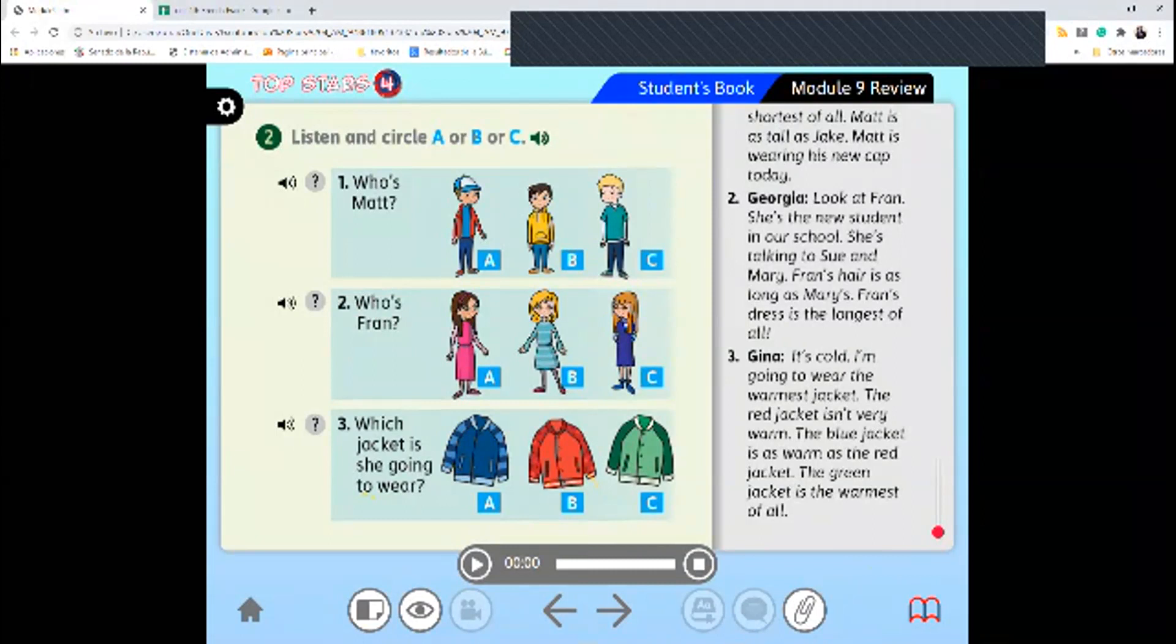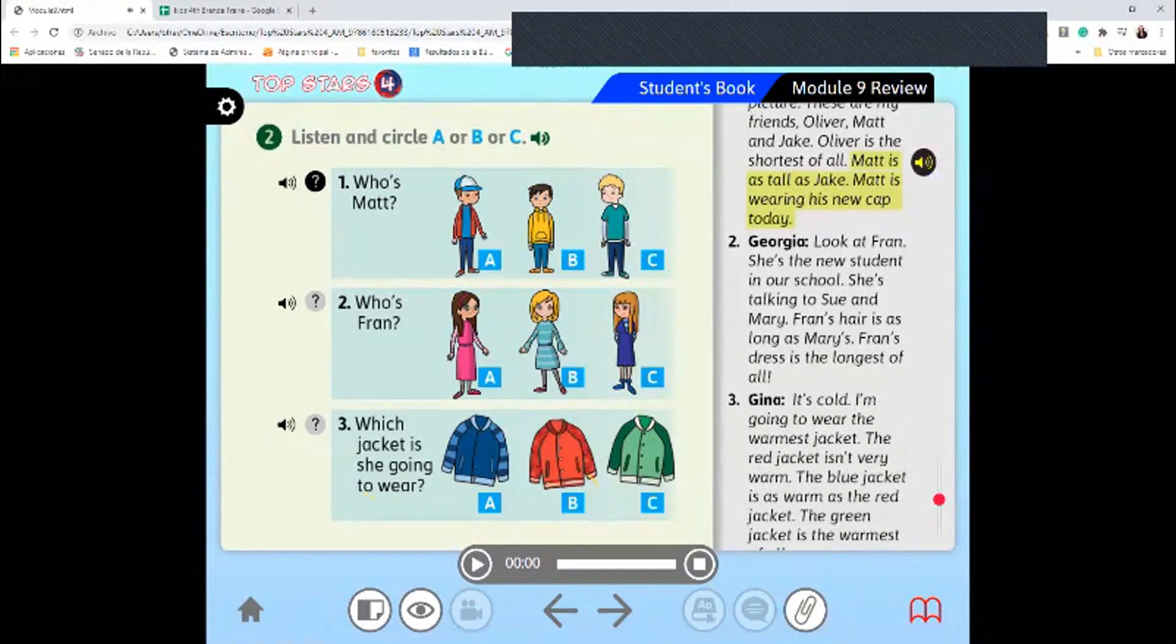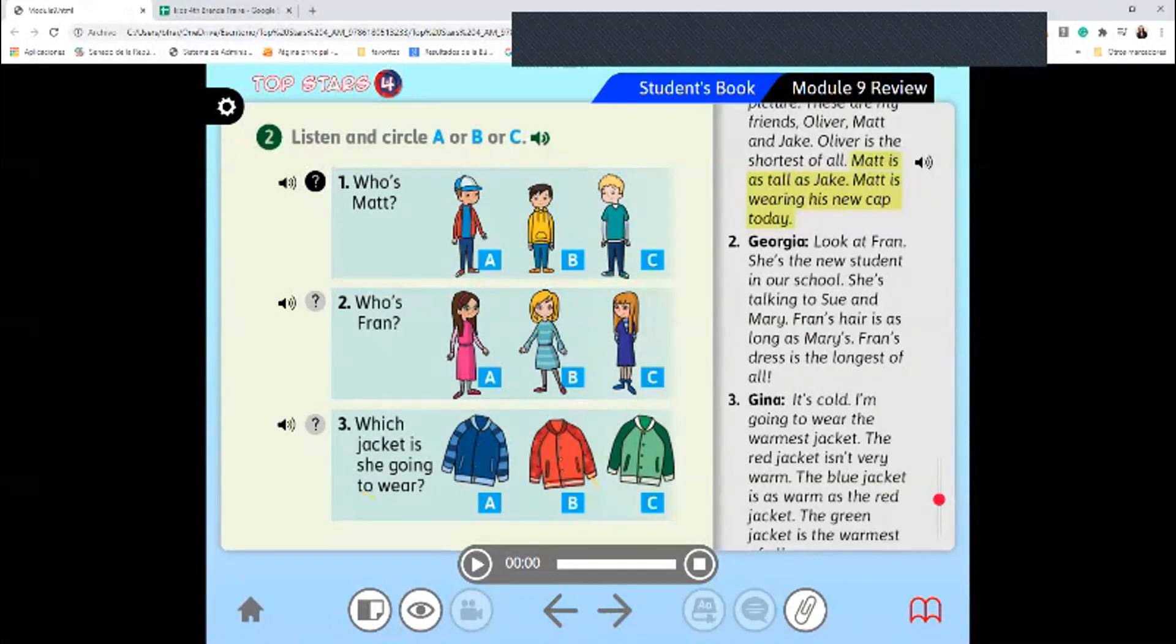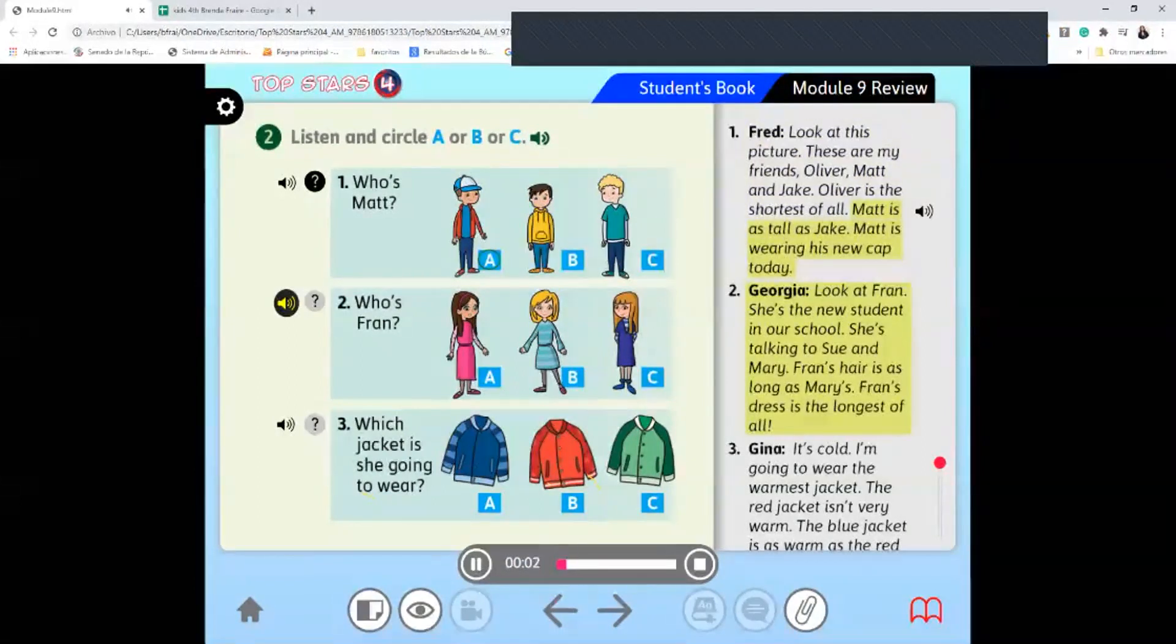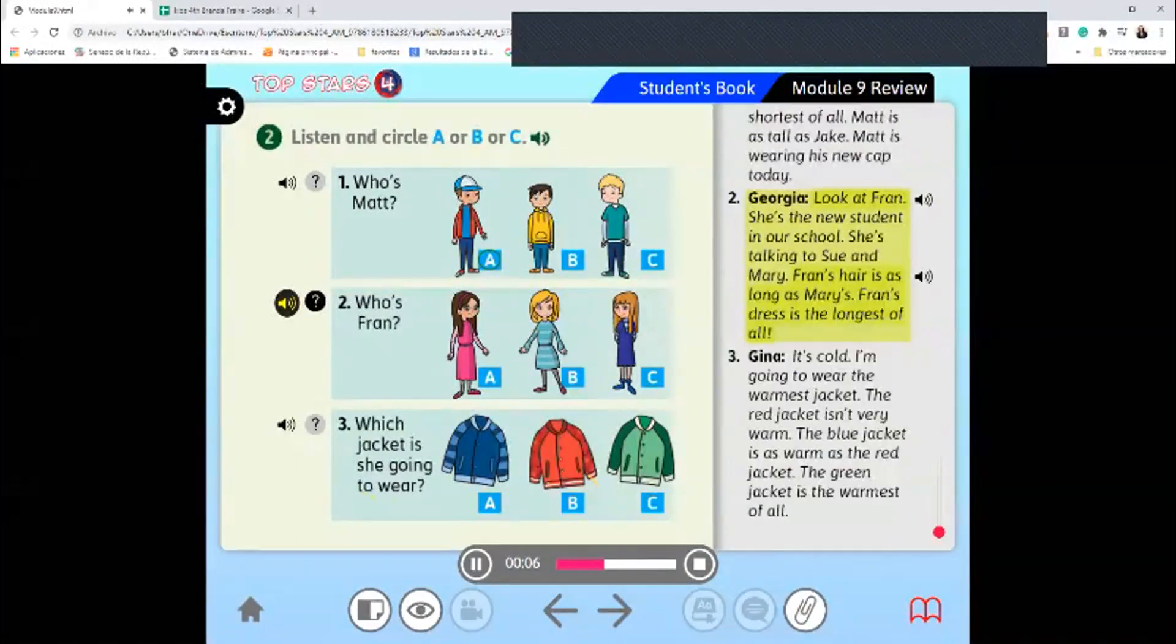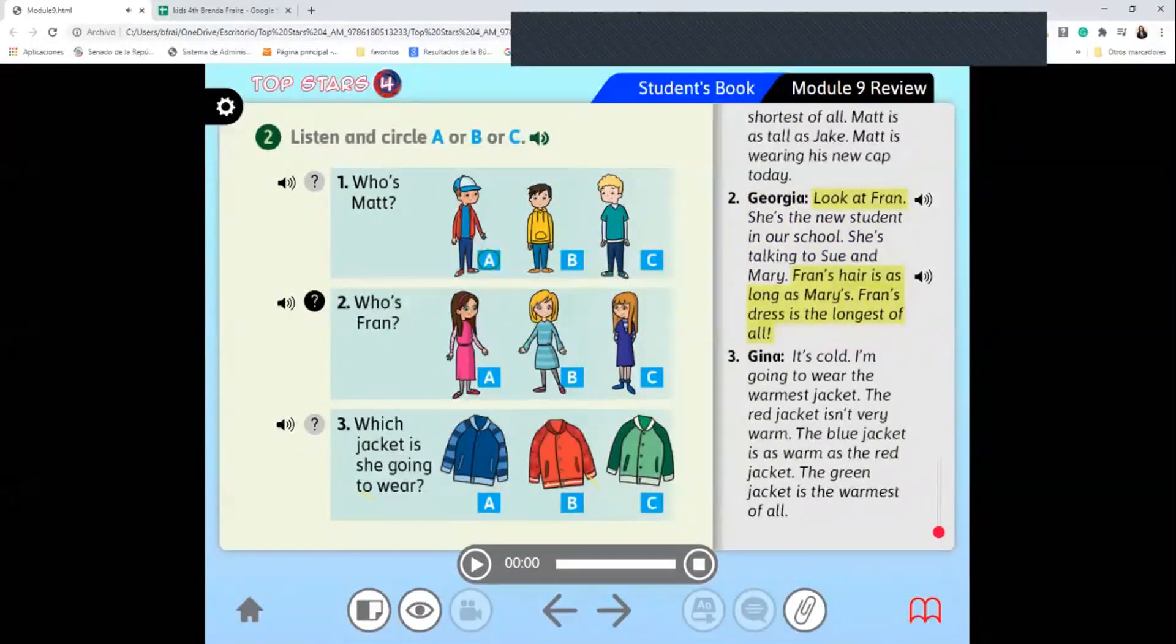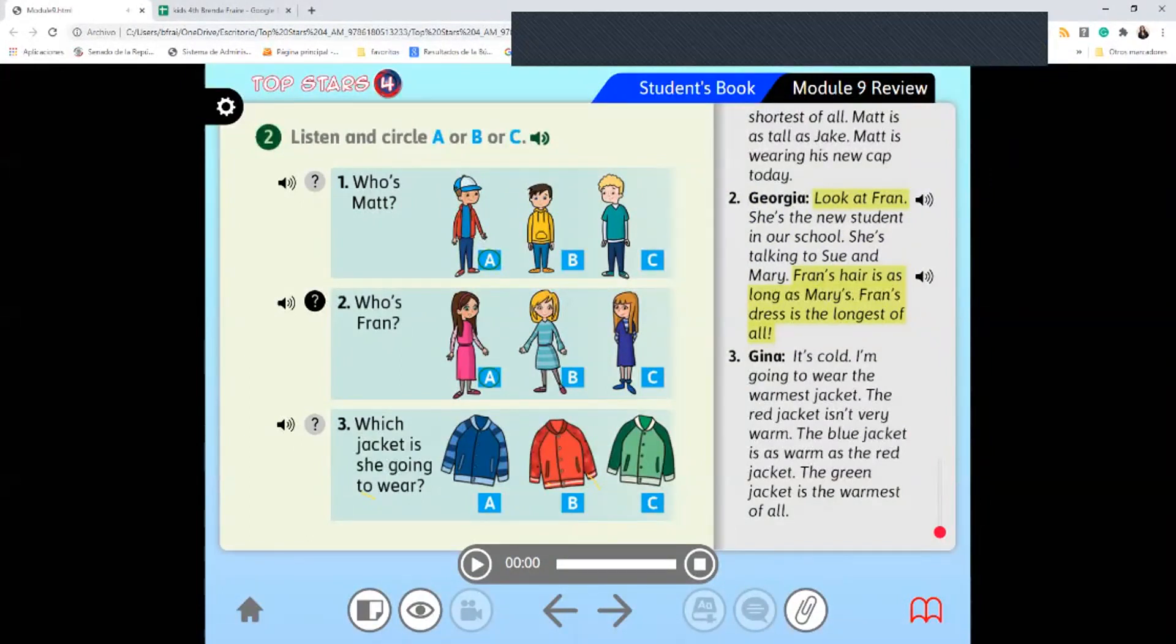'Two: Look at Fran. She's the new student in our school. She's talking to Sue and Mary. Fran's hair is as long as Mary's. Fran's dress is the longest of all. What's the answer? Who is Fran? A, B, or C? A. It is. Very good.'